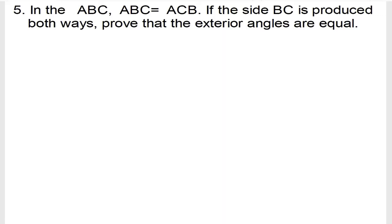Now we are doing exercise 6.1 question number 5. In triangle ABC, angle ABC is equal to angle ACB. If the side BC is produced both ways, prove that the exterior angles are equal.